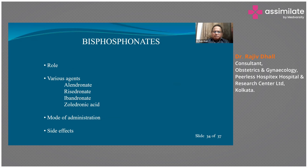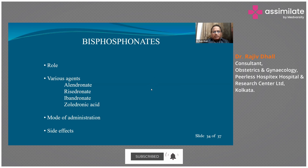Bisphosphonates are very important for osteoporosis treatment. Alendronate and risedronate are oral agents — alendronate is given at 70 mg once a week, risedronate at 35 mg once a week. Ibandronate can be given once a month, and zoledronic acid is an injectable form given once a year. They are spaced out because the osteoblast/osteoclast cycle is two to three weeks. These tablets must be taken on an empty stomach with the patient sitting upright for 30 minutes afterward, as they can cause mouth ulcers and esophagitis. Rare but dreaded complications include osteonecrosis and atypical thigh bone fractures.